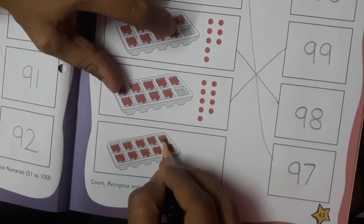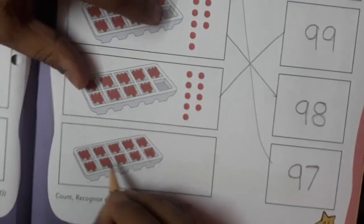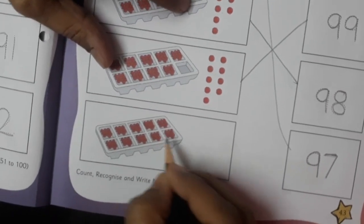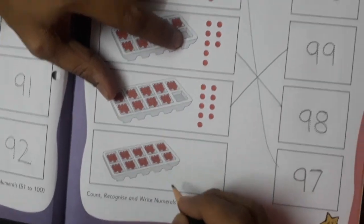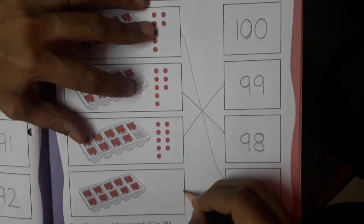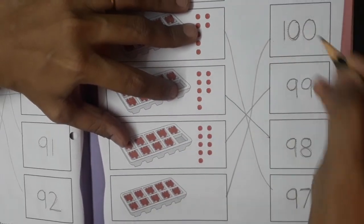And 100. So here these boxes have hundred cherries. Yes, so we will match it with 1-0-0, 100, like this.